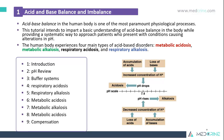The human body experiences four main types of acid-base disorders: metabolic acidosis, metabolic alkalosis, respiratory acidosis, and respiratory alkalosis. In this presentation, we shall look at the pH in detail, then we look at the buffer systems, and then we look at each of the acid-base disorders and their compensation.